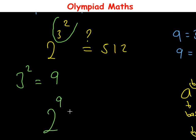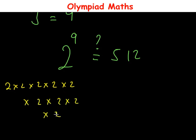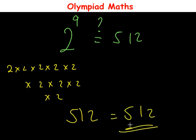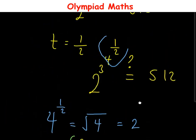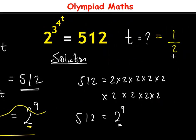This becomes 2 raised to power 9. Now 2 raised to power 9 is 2 multiplied 9 times, and if you multiply this out the final answer is 512. And this is also equal to 512 on the right-hand side. So the value of t that we got as 1 over 2 is indeed the correct solution. Therefore t is equal to 1 over 2, and this is the correct solution for the value of t in this equation.